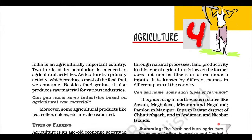Fiber crops. Cotton, jute, hemp, and natural silk are the four major fiber crops grown in India. The first three are derived from the crops grown in the soil. The latter is obtained from cocoons of the silkworms fed on green leaves, especially mulberry. Rearing of silkworms for the production of silk fiber is known as sericulture.